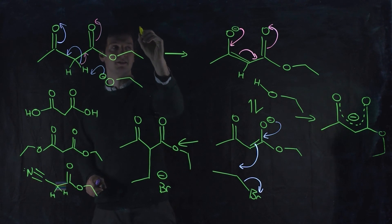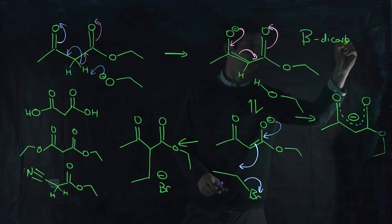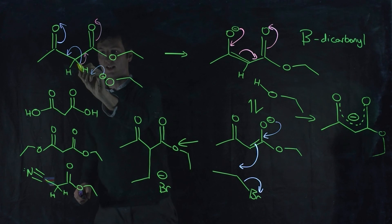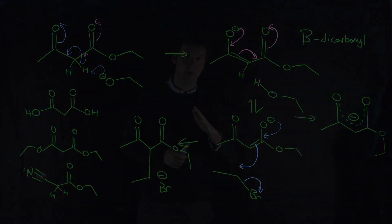So, beta-dicarbonyls. Beta-dicarbonyl. That's two carbonyls, alpha-beta, to each other. Okay, I hope that helps. If you have any questions, post them below or ask in lectures. That's all for now. Bye-bye.